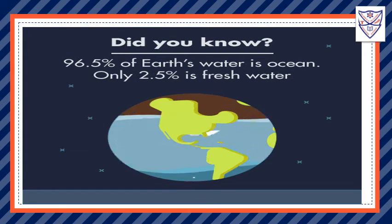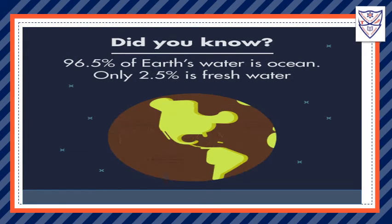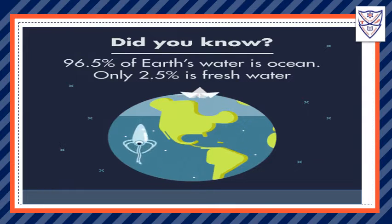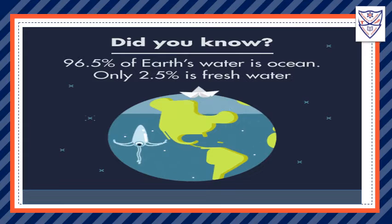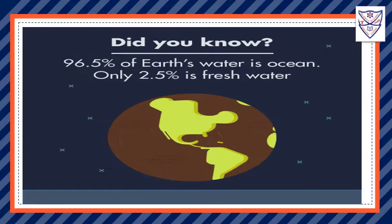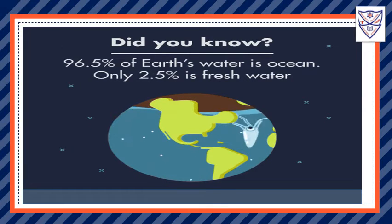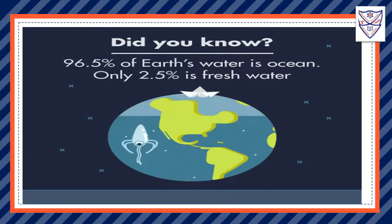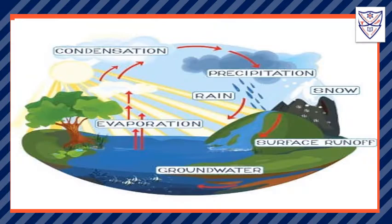The water on the earth includes both sea and fresh water. My dear students, 96.5% of the earth's water is ocean and only 2.5% is fresh water. Sea water is salty and is found in oceans, while other sources of fresh water are the rivers, lakes, and ponds. Rain is the main source of water.